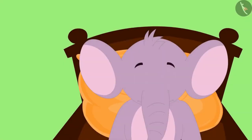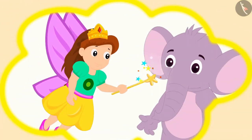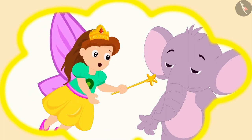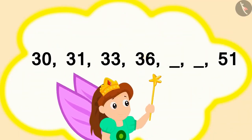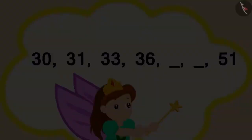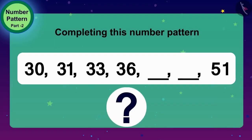One day, Appu was fast asleep. In his dream, came an angel. The angel said to Appu, 'I will ask you some questions. If you answer them correctly, I will give you one special gift.' Appu became happy. The angel showed a number pattern to Appu and said, 'Complete this number pattern.' Appu started wondering how he could complete it. Children, can you help Appu? Let us find the rule of this number pattern.